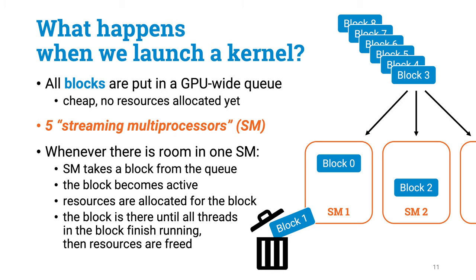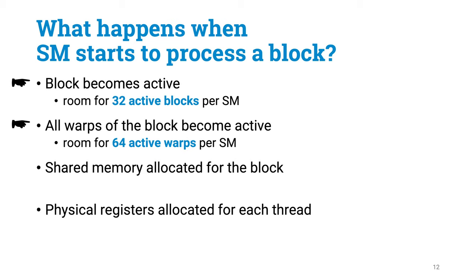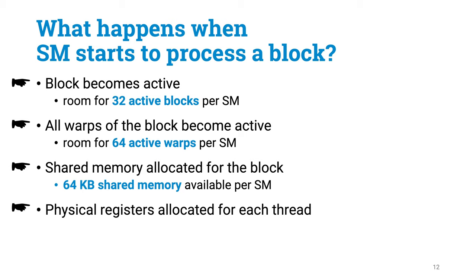When an SM takes a block from the queue, the block and all its warps become active, and resources are allocated for them. First, you need to reserve one slot for the block itself — there is room for only 32 blocks per SM. Second, you need to reserve one slot for each warp — there are only 64 such slots per SM. Third, you need to allocate shared memory for the block — there is only 64 kilobytes of shared memory in the SM. Finally, you need to allocate space for the registers of each thread — there are 64,000 physical 32-bit registers in the SM.